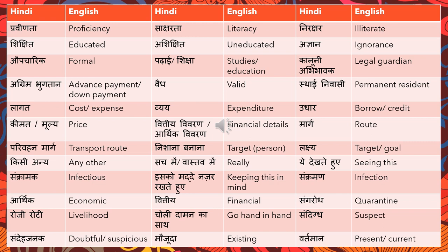'Keemat' or 'Mulya' means price. 'Vittiya vivaran' or 'Aarthik vivaran' means financial details. 'Marg' means route; 'Parivahan marg' means transport route — 'Parivahan' means transport. 'Nishana banana' means to target a particular person — 'Maine use nishana banaya' means 'I targeted that person.' 'Lakshya' means target or goal. 'Kisi anya' means any other. 'Sach mein' or 'Vaastav mein' means oh really or in reality.